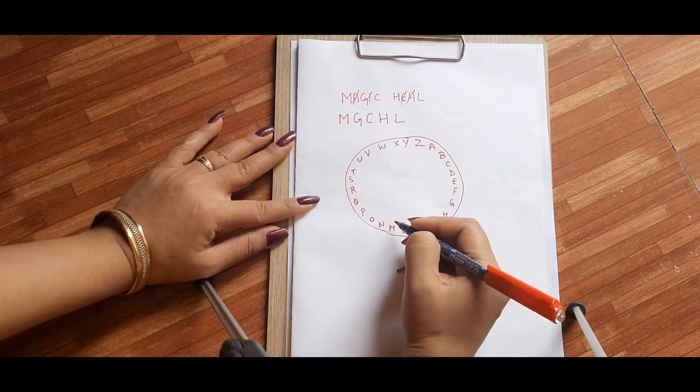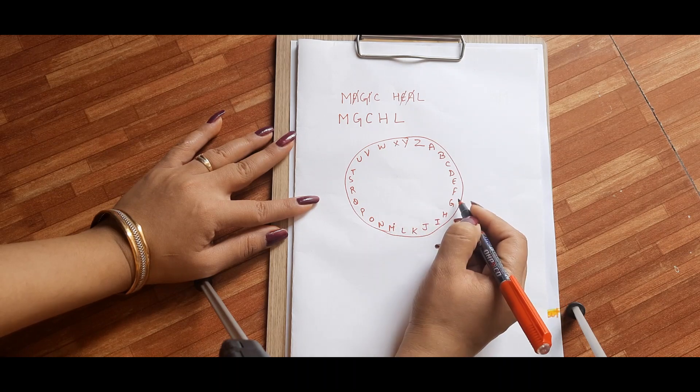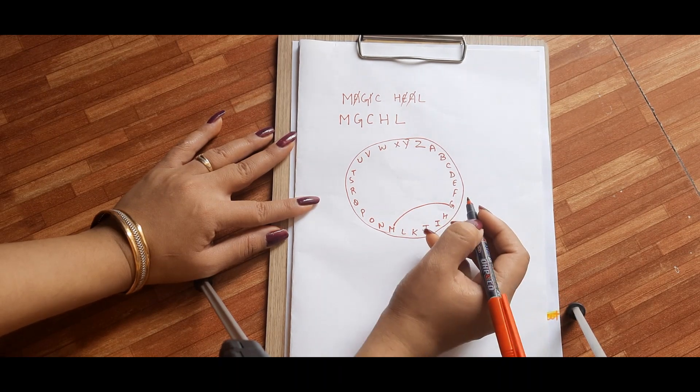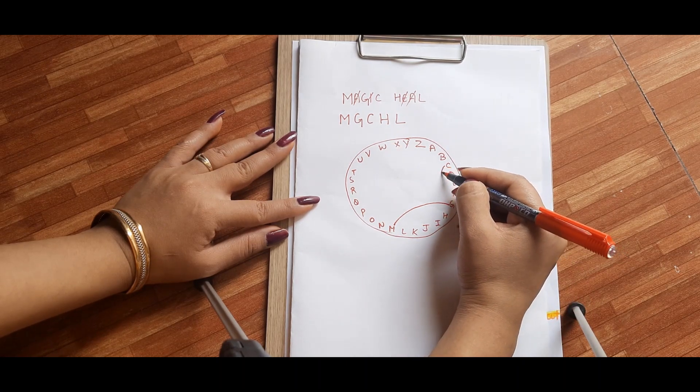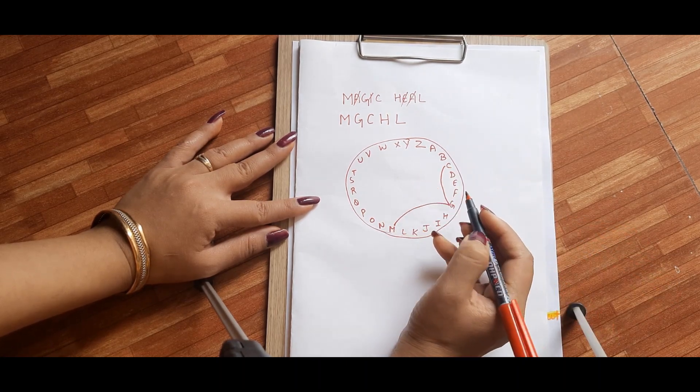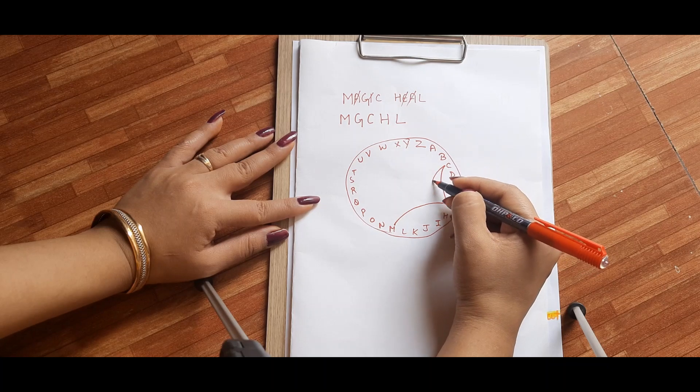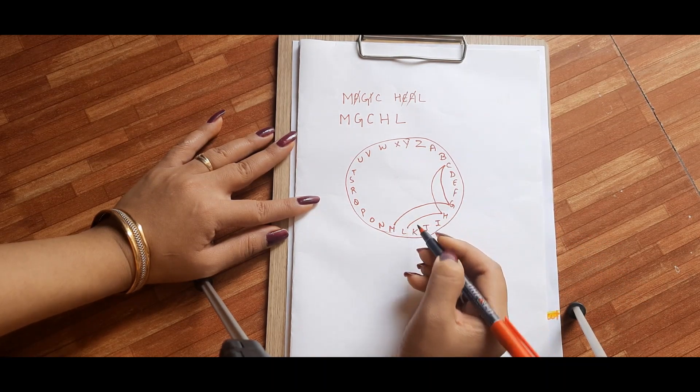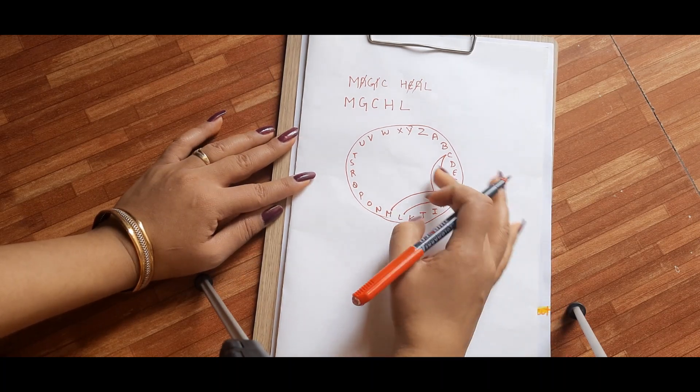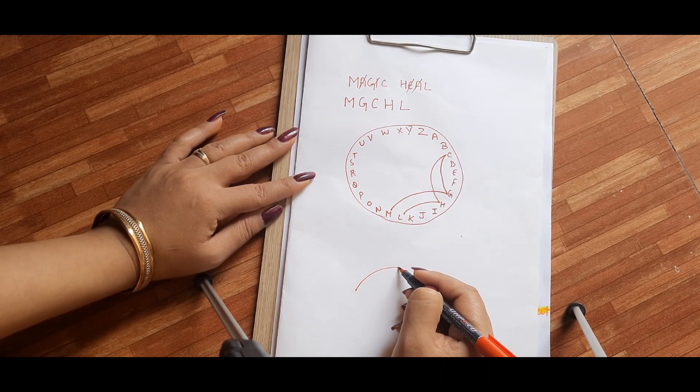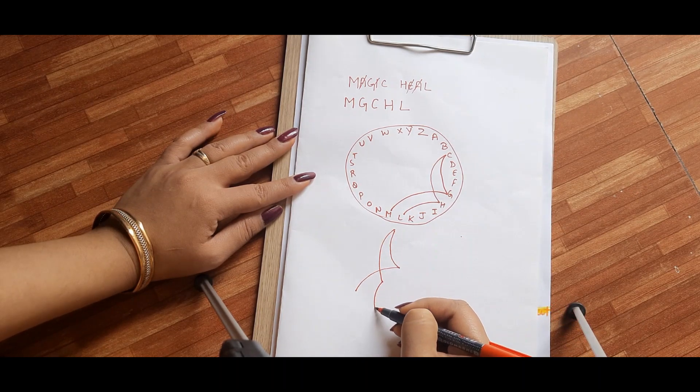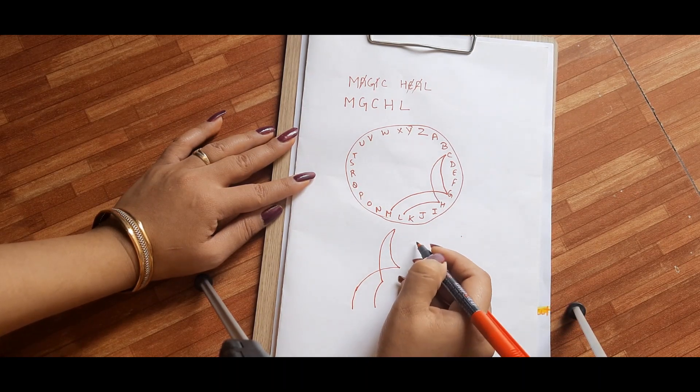So first is M, then I will take from M. You can make it straight too. I like it so I am making it. Then G, then C, then H, then L. So if we see, if I draw it straight it is something like this. So this is a symbol of Magic Heal.